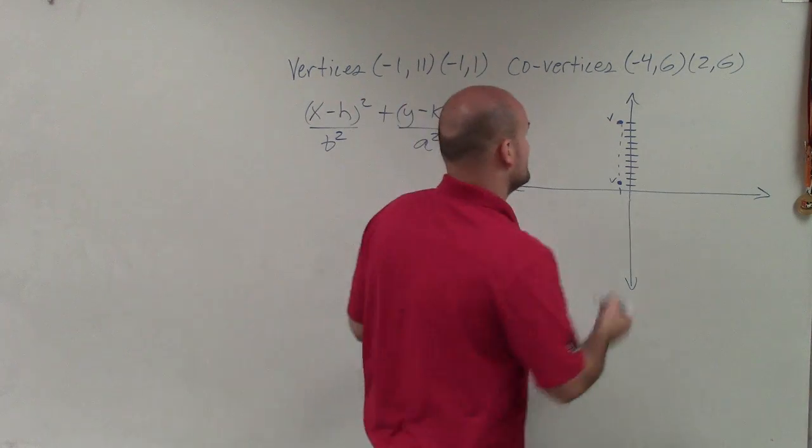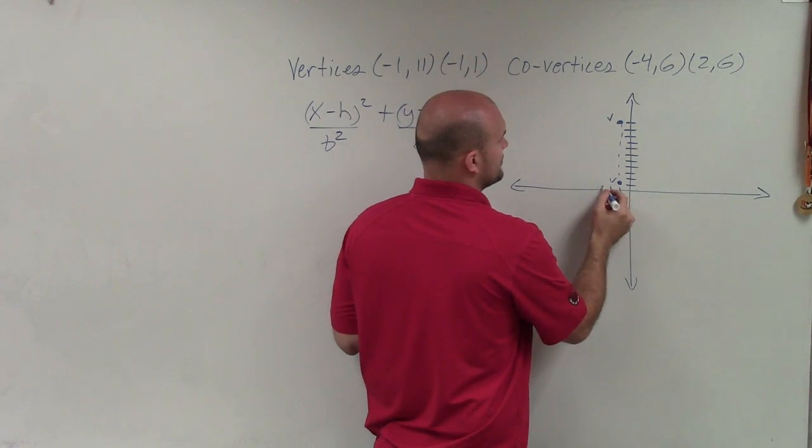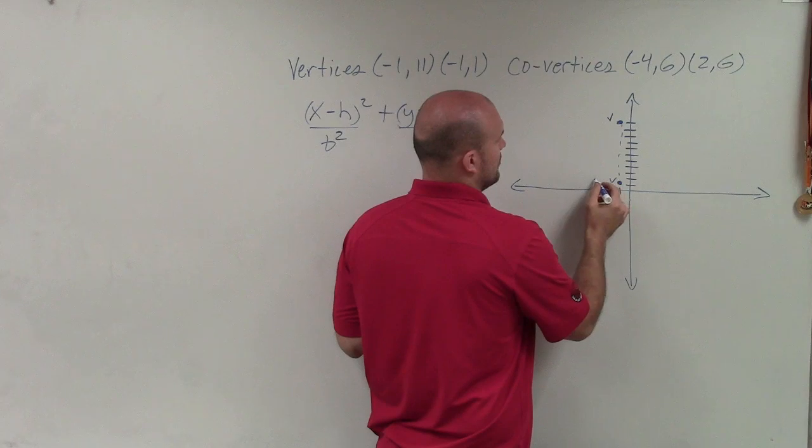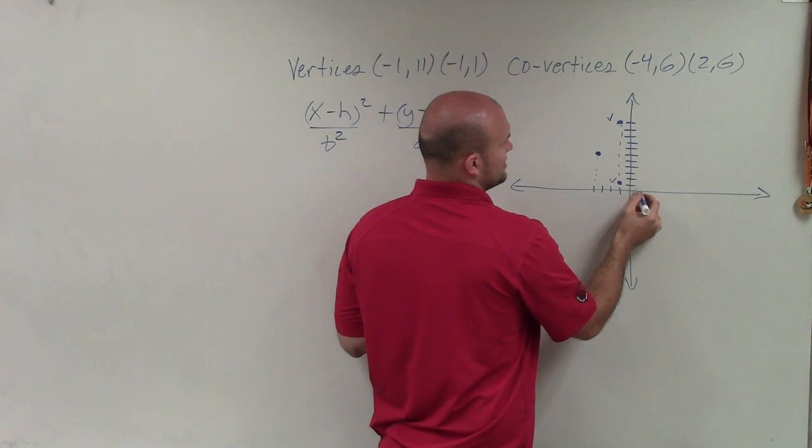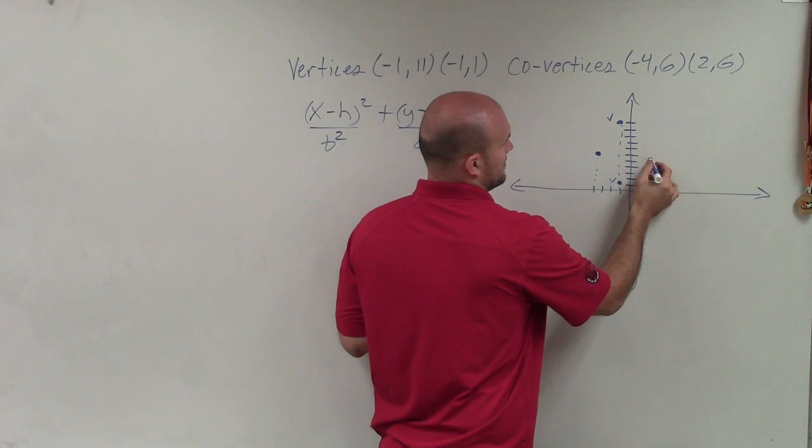Let's plot the covertices though first. So that's at (-4, 6) and at (2, 6). OK.